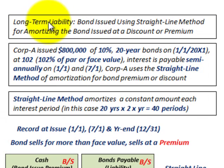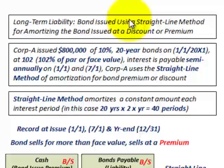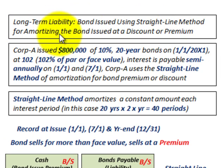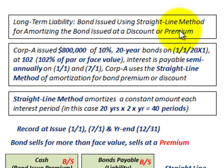What we're going to be looking at here is a long-term liability, specifically a bond issued using the straight-line method for amortizing, and we're going to be looking at both issuing it at a discount or at a premium.